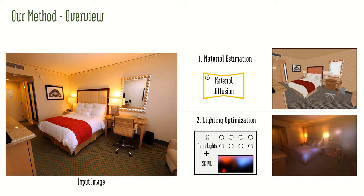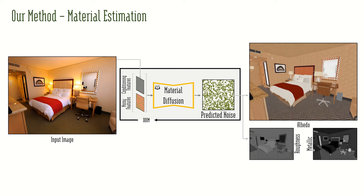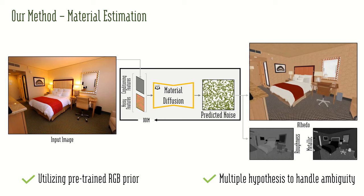Appearance decomposition is a highly ambiguous task. We propose to use a generative model to sample from the solution space. We use a pre-trained diffusion model and fine-tune it for our task by conditioning on the input image to predict albedo, roughness, and metallic maps. Our method uses the strong image prior of the pre-trained diffusion model to help generalization to real-world samples and predict multiple hypotheses to handle the apparent ambiguity.